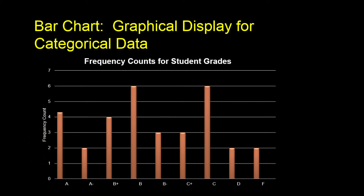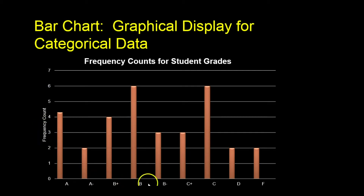Down here it says Grades, and on top it says Frequency Counts for Student Grades. You should always have a title on all of your graphs. There are three components every graph should have: a title, and the x and y axes should be labeled. This bar chart shows the distribution of grades before I collapsed the data, and you can see there are nine bars — one for each grade category: A, A minus, B plus, B, B minus, and so on.